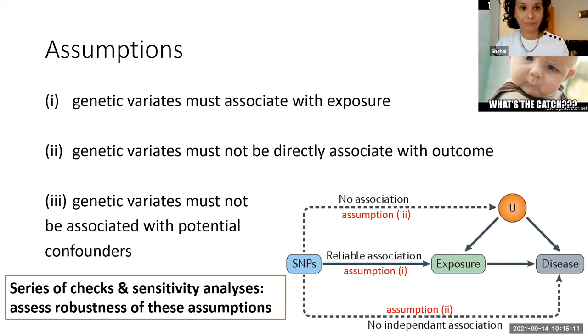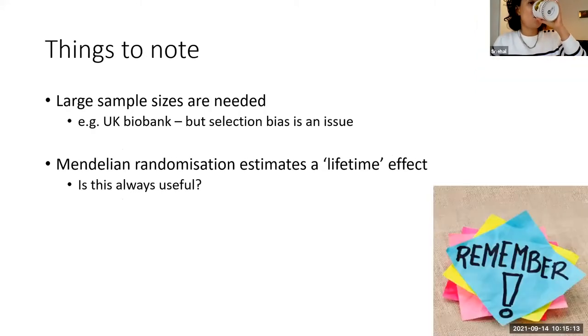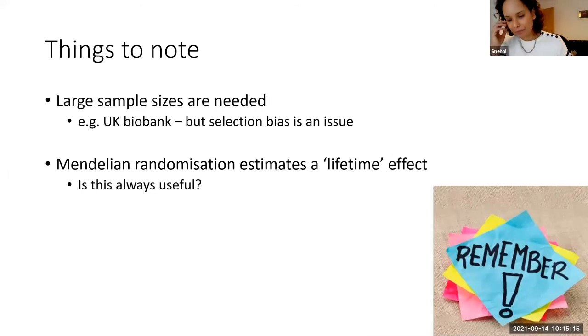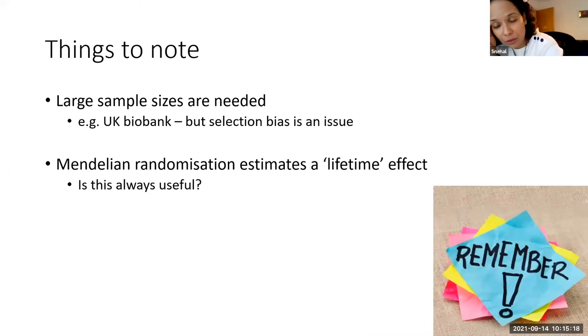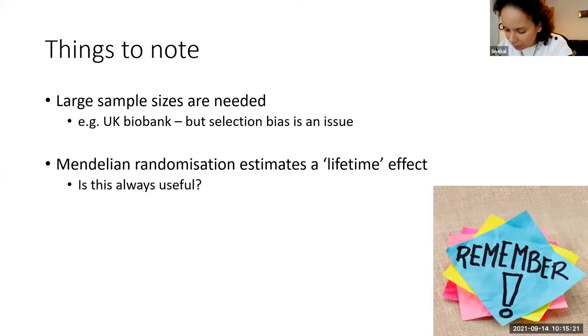For each of these assumptions there are several different checks and sensitivity analyses you can do to assess robustness, which means you can do your Mendelian randomization, check the robustness of your findings, and if your findings are robust you're in a much better position to talk about whether your exposure is causally affecting your outcome.